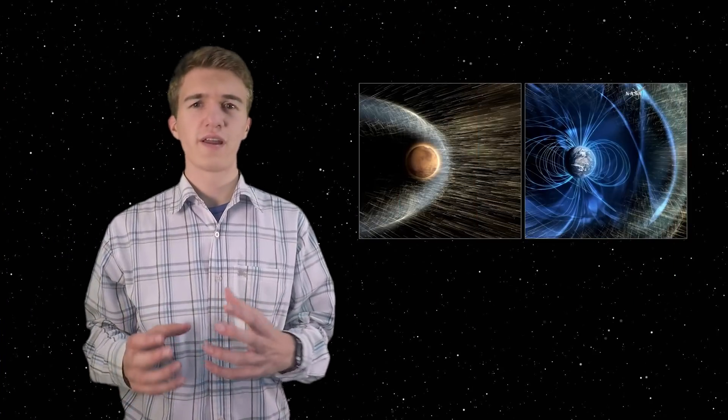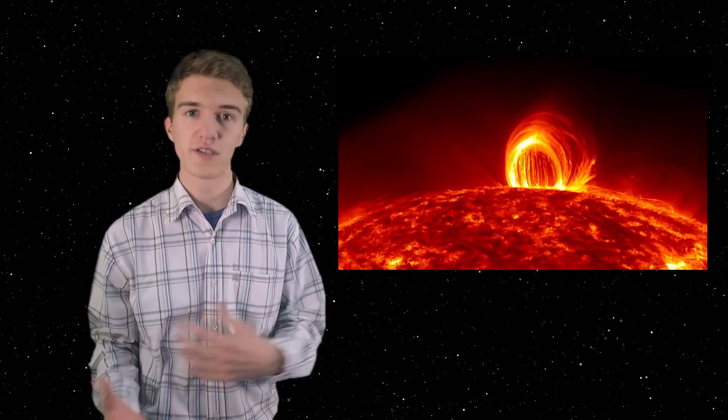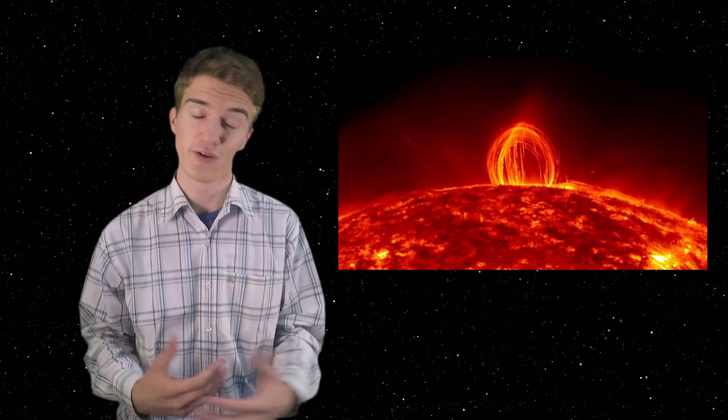So in order to understand how Mars is effectively losing its atmosphere, we first have to talk about the Sun. The Sun has constant solar radiation that is exposed through solar flares and just regular activity that bombards the planets in the solar system.